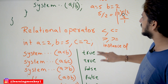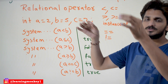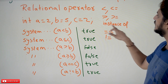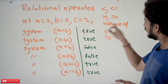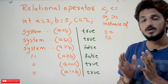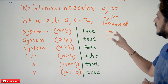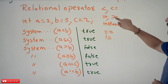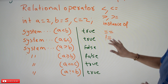Coming to the relational operators — these are also binary operators, applied between two operands. The symbols are: less than, less than or equal to, greater than, greater than or equal to, instanceof. The instanceof operator will be discussed in coming classes once we cover class and object. Also equal to and not equal to. Less than, less than or equal to, greater than, and greater than or equal to are called relational comparison operators, while equal to and not equal to are equality operators.